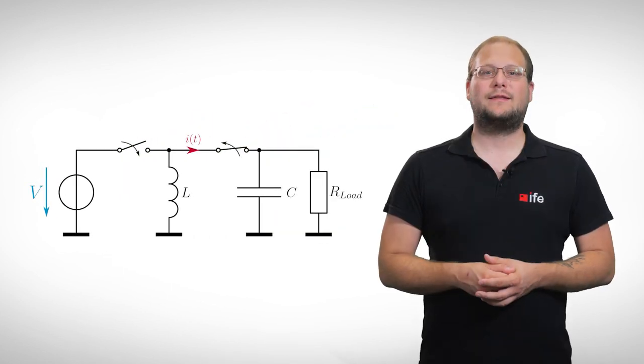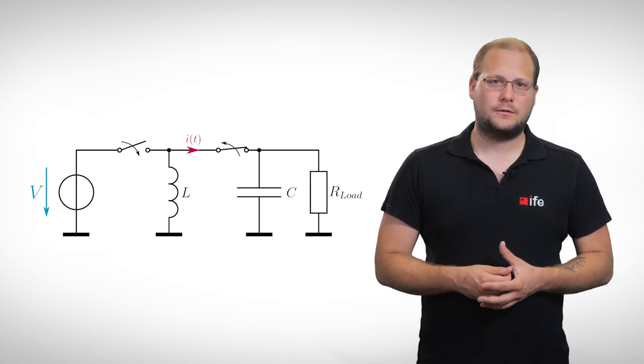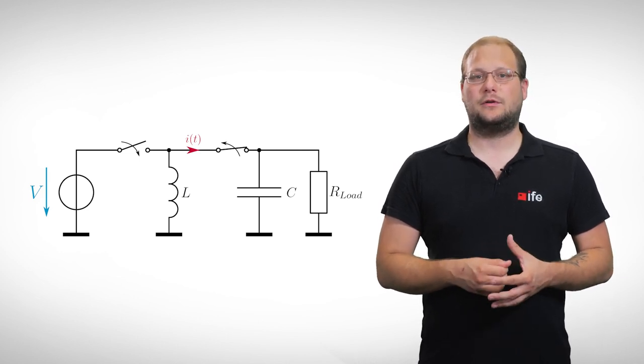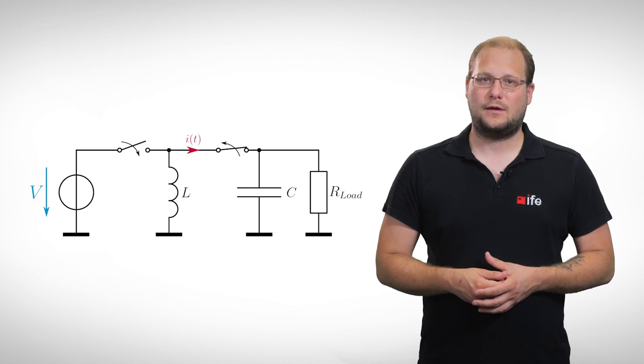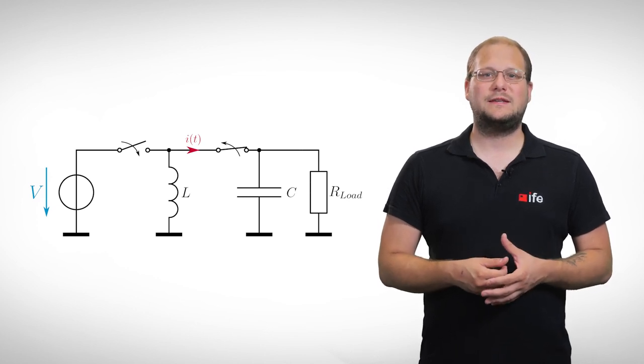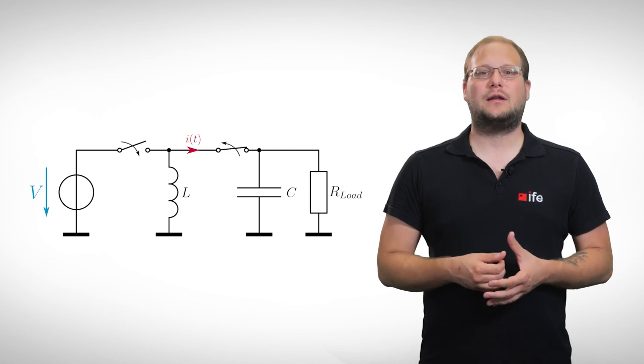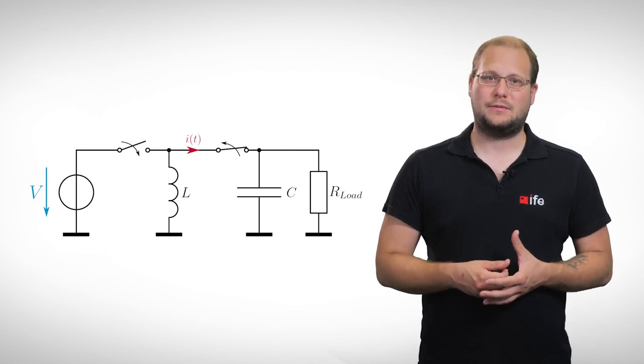As we can see, we get the negative voltage at the output. This is basically an inverting switched mode power supply. In another video, we will see how we can control the output voltage and what other parts are important for our power supplies.